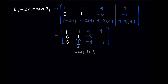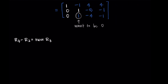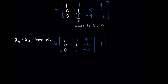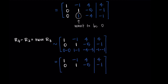Continuing spot by spot: I see a 1 in the bottom row second column that I want to be a zero. I'll use row three minus row two as my new row three. I'm using row two specifically because it has a zero in the first column, so it won't mess up the zero I've already worked hard to get. That gives: 0 minus 0, 1 minus 1, negative 4 minus negative 5, and negative 1 minus negative 1. Simplifying: zero, zero, negative 4 plus 5 is 1, and negative 1 plus 1 is zero. Conveniently, that's a one in the position we wanted.